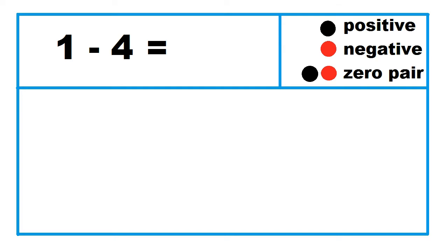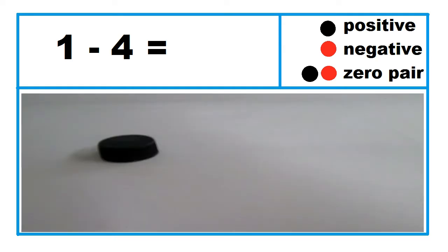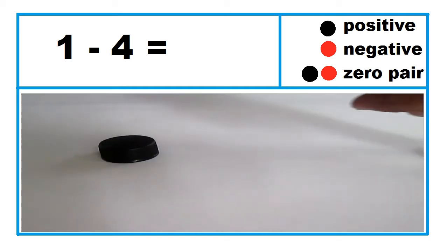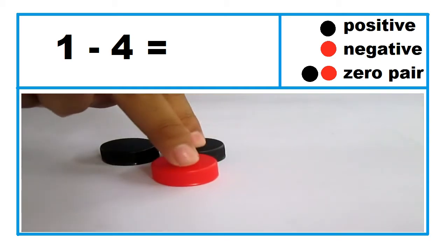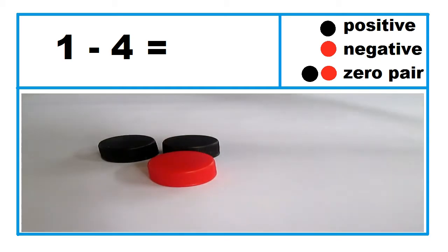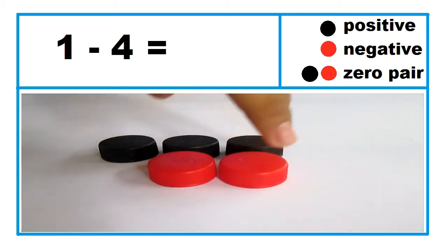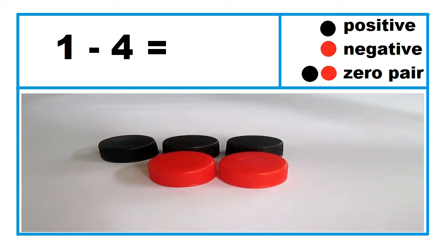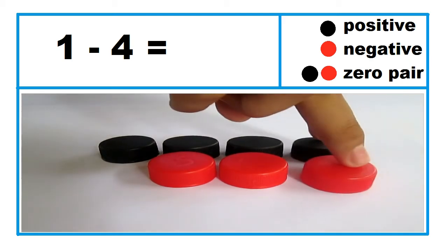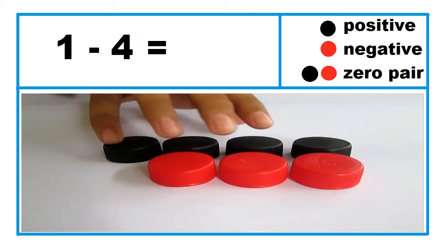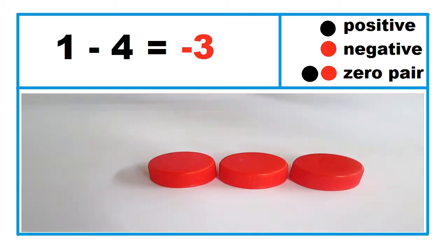Another example: 1 minus 4. To take 4 black caps from one black cap, introduce three zero pairs, then take away four black caps. So, 1 minus 4 equals negative 3.